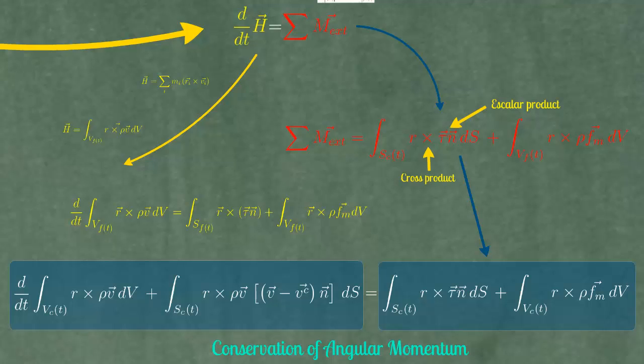The conservation of angular momentum may be the most important of the three formulas. The fundamental equation of turbomachines, the Euler equation, comes from this expression.